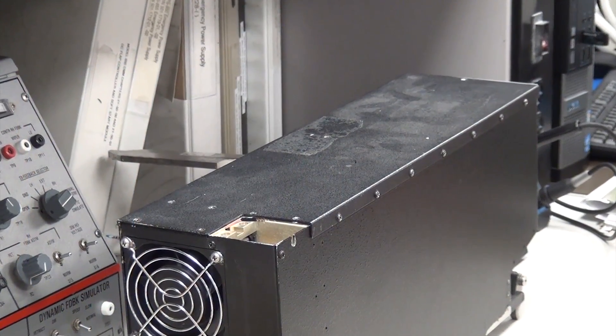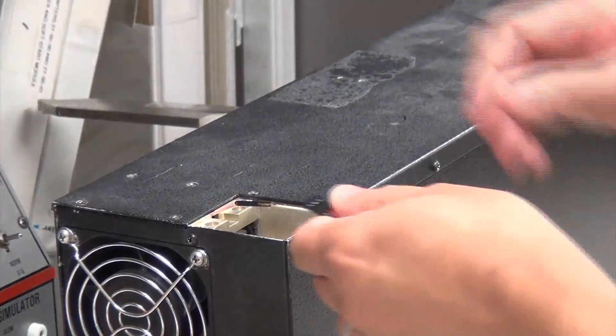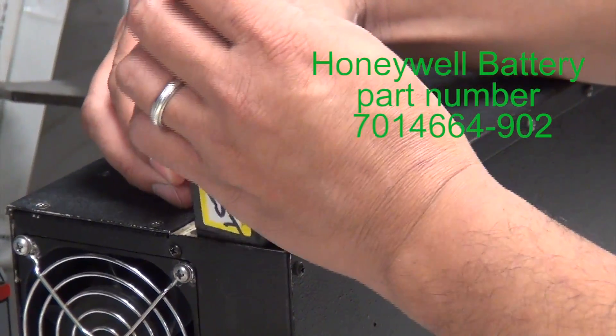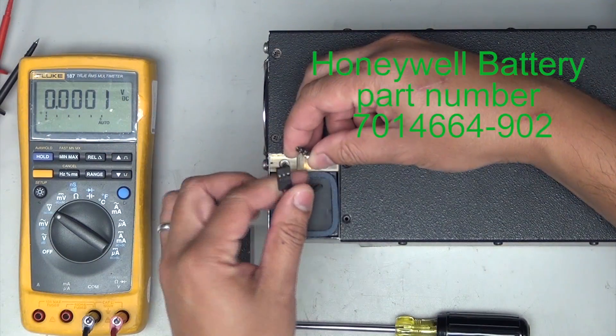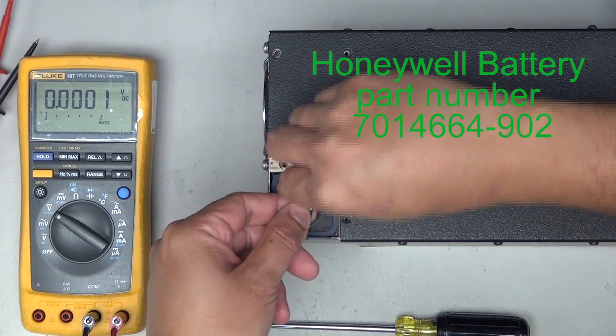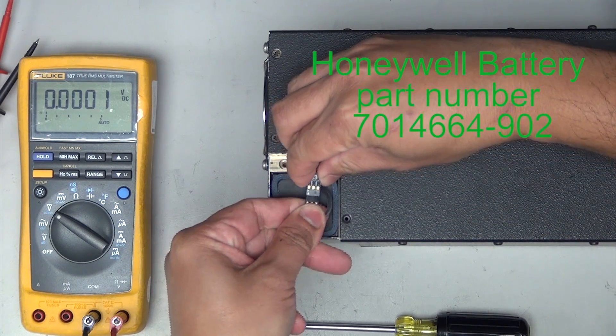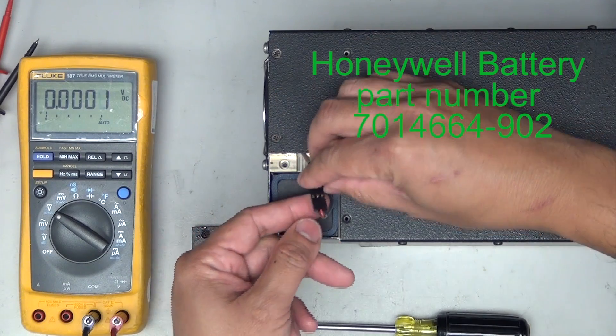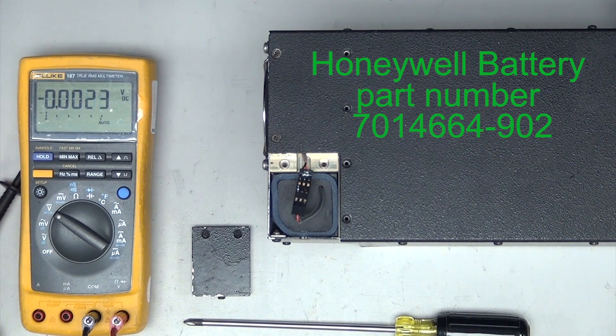Install the new battery and reinstall the connector. Honeywell IC 800 Battery Part Number 7014664-902. The parts can be obtained at Cessna Service Parts program CSPNP.